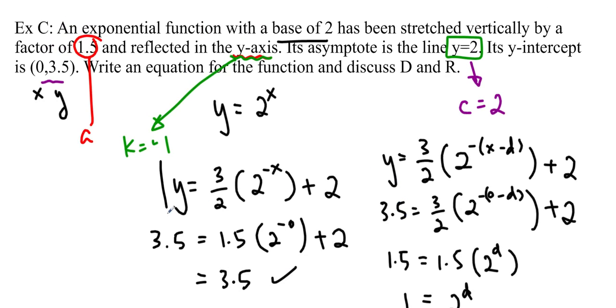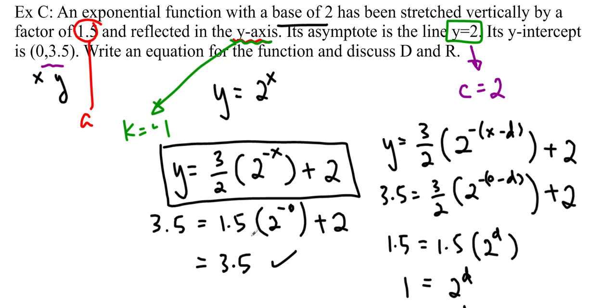Okay, so that is going to be the equation. It is y equals 3 over 2, times 2 to the negative x plus 2. That is our equation, and we checked it in two ways. And for the domain and range, we can see there is no reflection on the vertical. So it doesn't affect the range that way, but it is moved up 2. Actually, let's talk about the horizontal first.